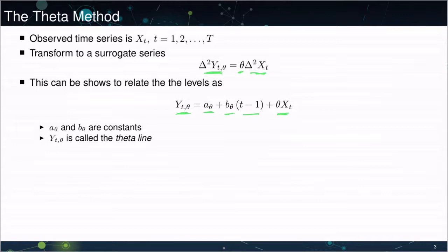So you can see that Xt will generally appear in this series, but it will be damped or possibly exaggerated depending on the value of theta. This Yt of theta is known in the original paper as the theta line.